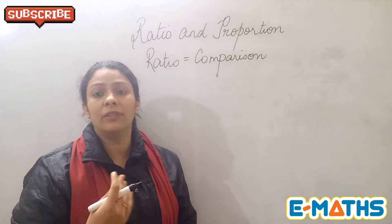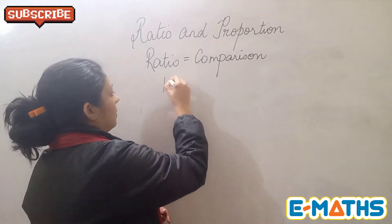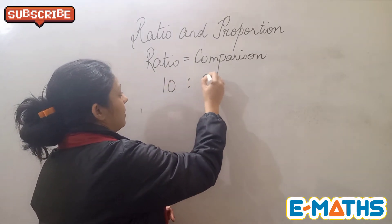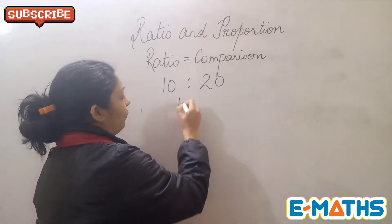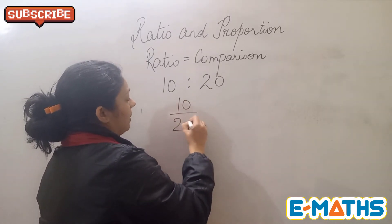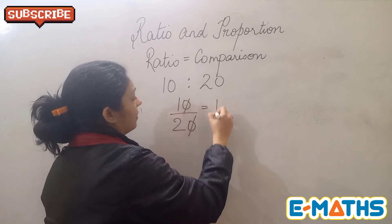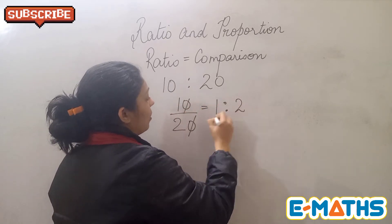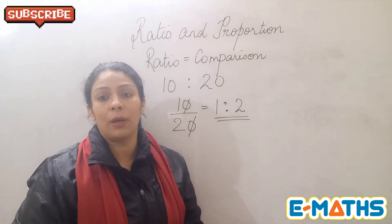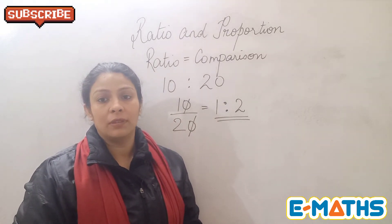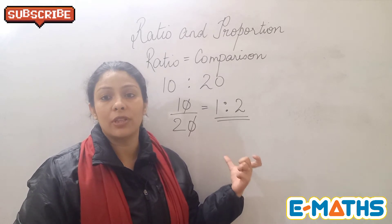Like suppose I have 10 rupees and my husband has 20 rupees. So if I need to find out the ratio between them, we need to simplify it. So the ratio that we are getting is 1 is to 2. That means my husband has just the double amount that I have. This is how we write down the ratios.